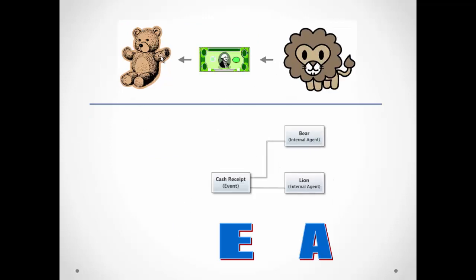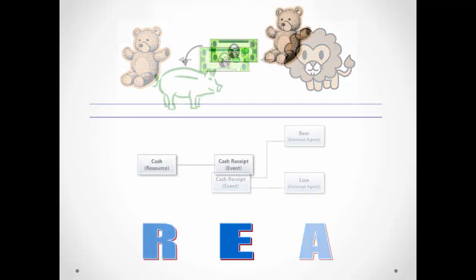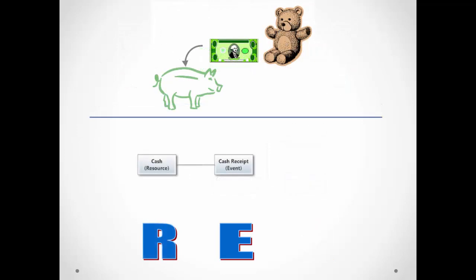When the lion pays the bear, we have another event — the cash receipt event. The bear participates in the event by accepting the money, and the lion participates by paying the money. After receiving the money from the lion, the bear deposits the cash into the bank. The bank accounts are a resource that increases due to the cash receipt event.